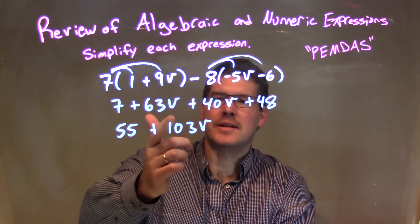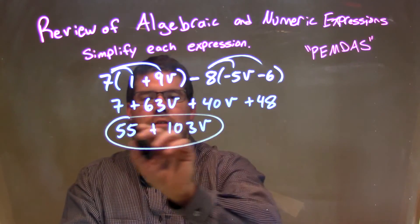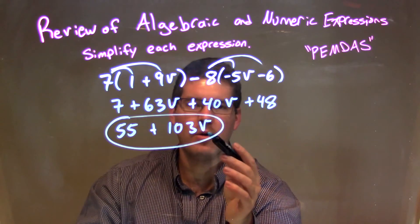And so, now we've combined our like terms, the b's and then the numbers. So, our final answer here is just 55 plus 103b.